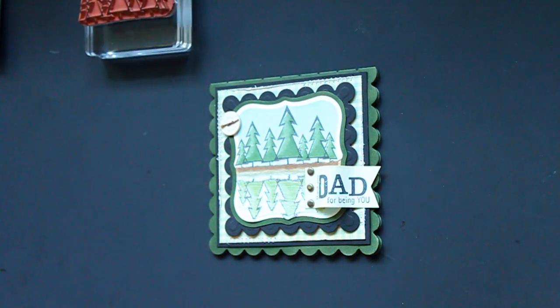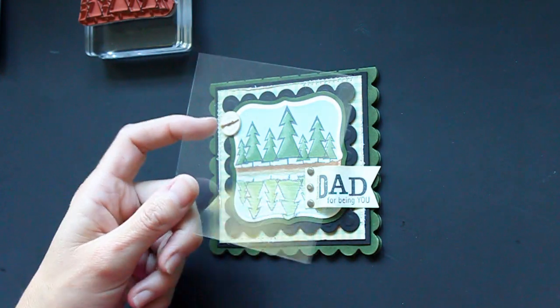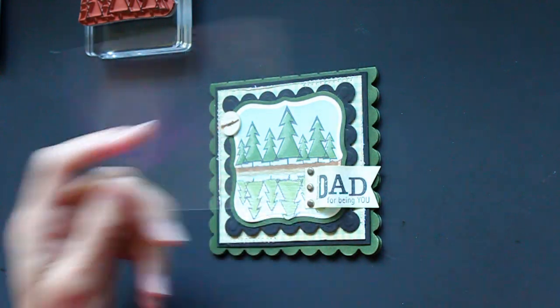But what I prefer, and I think is the easiest, is to use a piece of acetate. Just cut up overhead transparency.